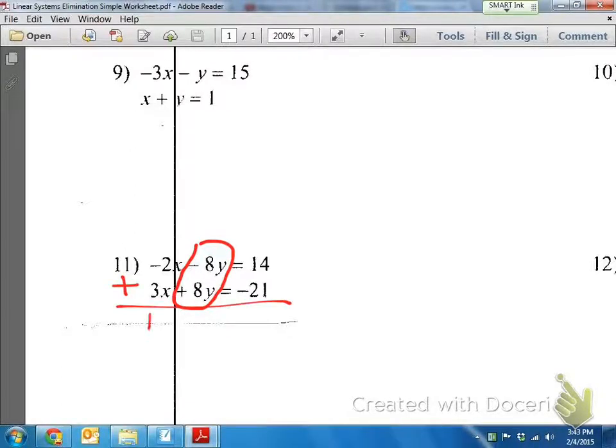So negative 2 plus 3 is just 1x. Negative 8 plus positive 8 is 0y, and 14 plus negative 21 is negative 7. So the 0y is eliminated, and 1x equals negative 7, so that just means x equals negative 7.